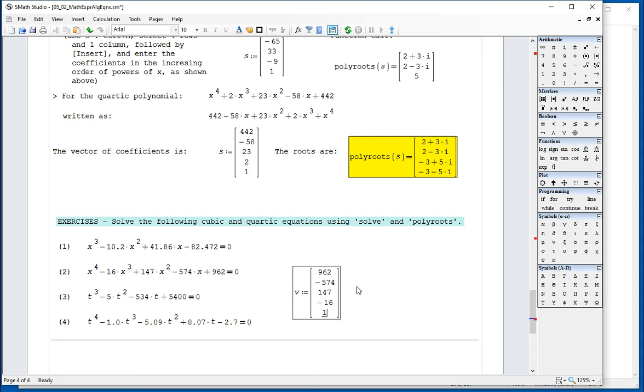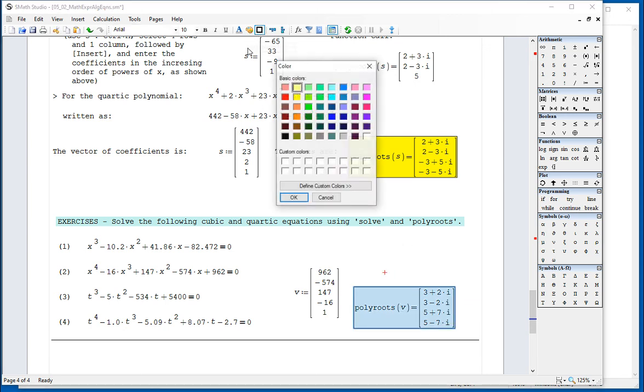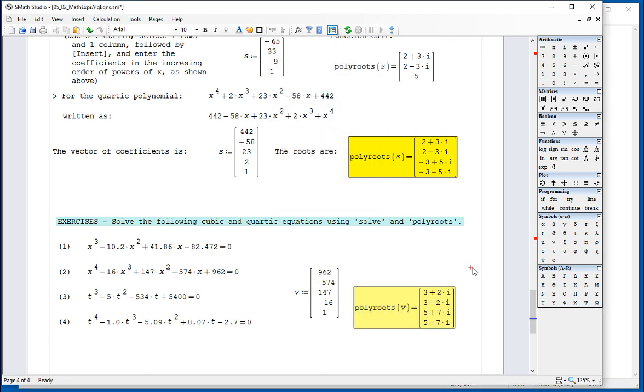And then right here, I'm going to type poly roots, parentheses, v equals. And then I'm getting there my four complex roots. And I could, if I need to turn in an assignment, I will highlight it like that.